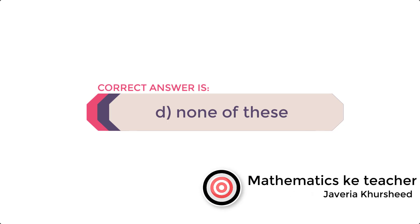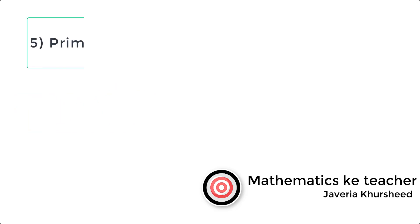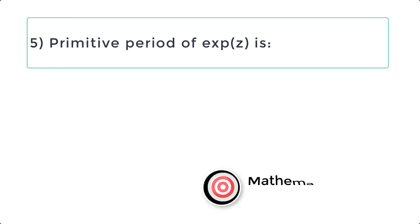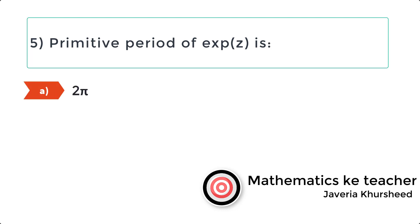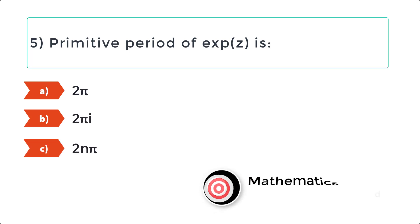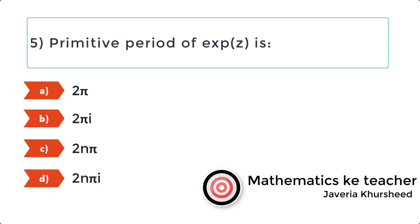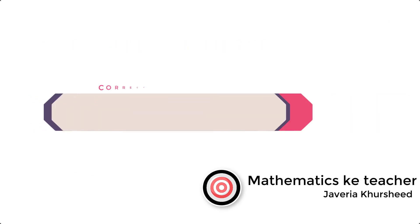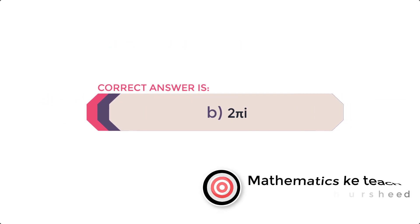Question 5: Primitive period of EXP of Z is: A) 2π, B) 2π iota, C) 2nπ, D) 2nπ iota. Correct answer is B) 2π iota.